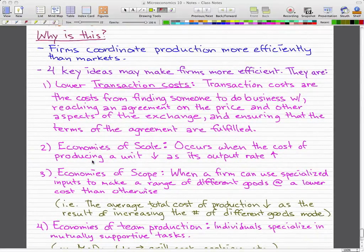There's economies of scale. This occurs when the cost of producing a unit decreases as the output rate increases. So as you make more and more output, the cost decreases.